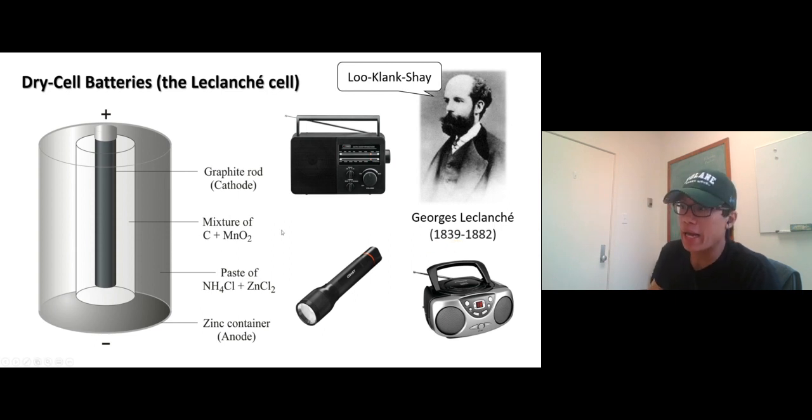Wow, that's long back there. It consists of, again, it's a battery just like galvanic cell, so it's gotta have an anode, which is where oxidation reaction occurs, and a cathode where reduction reaction occurs.